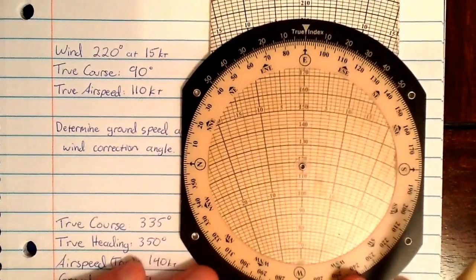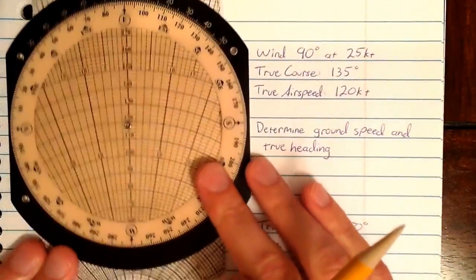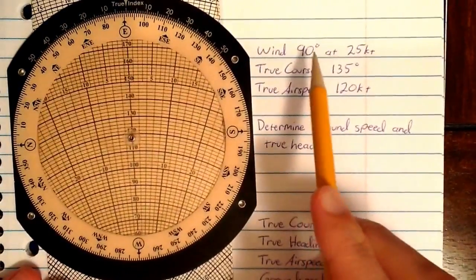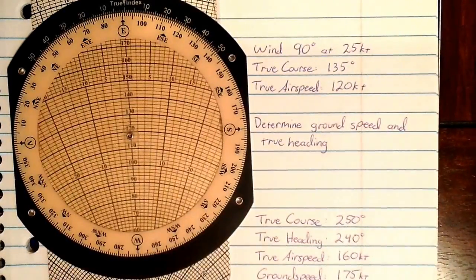Let's do another. Now our wind is 90 degrees at 25 knots. Our course is 135, and our airspeed is 120.